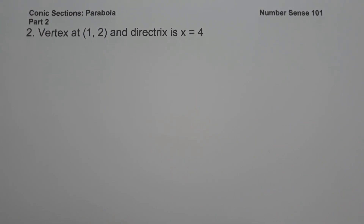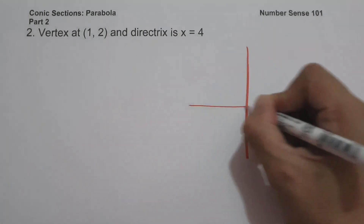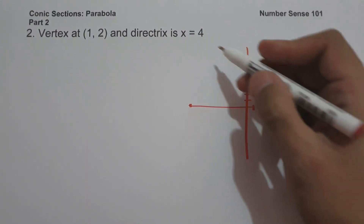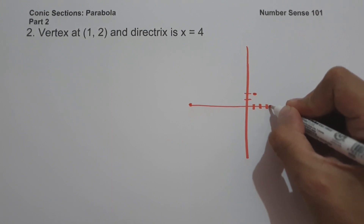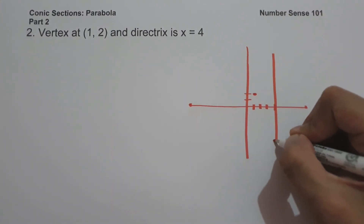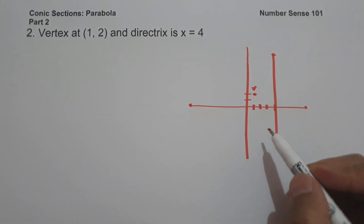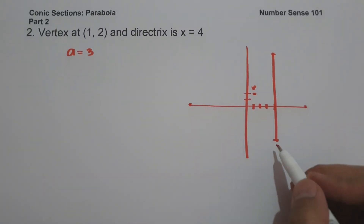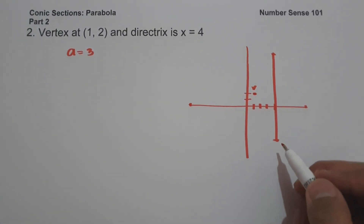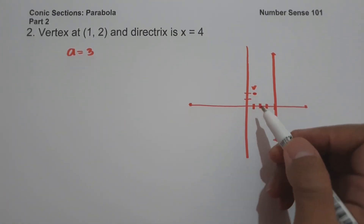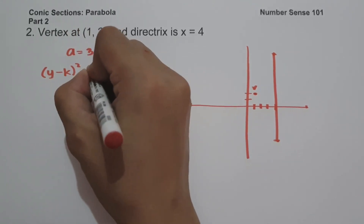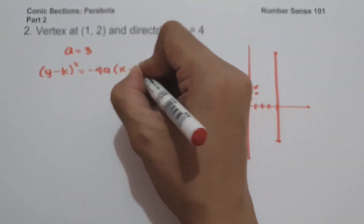In example number 2, we have the vertex at (1, 2) and the directrix is x = 4. Let us sketch the graph. We plot the vertex at (1, 2), and the line x = 4. The distance between the vertex and the line of the directrix is 3 units, so the value of a is 3. Since the directrix is behind the opening of the parabola, our focus is on the left side of the graph, so the parabola opens to the left. We use the formula (y − k)² = −4a(x − h).